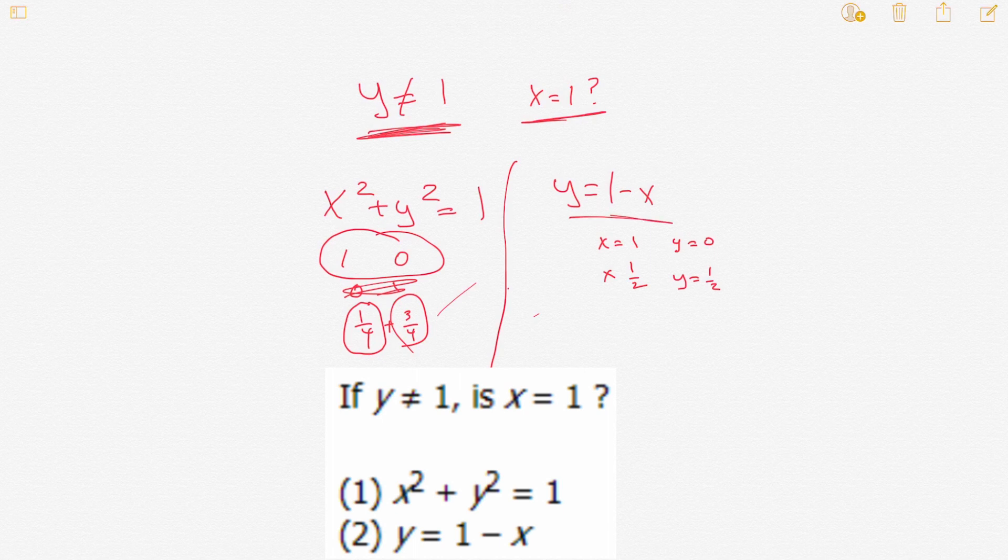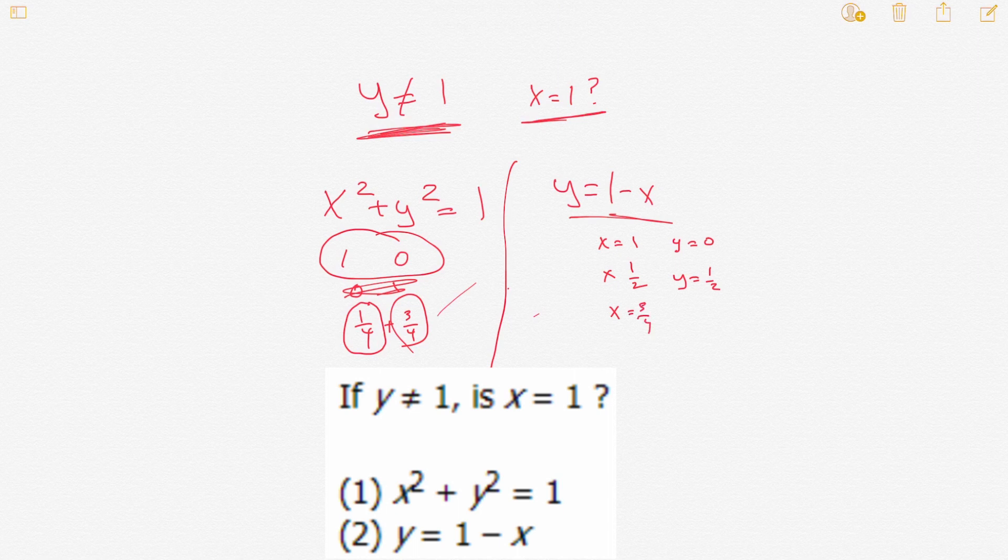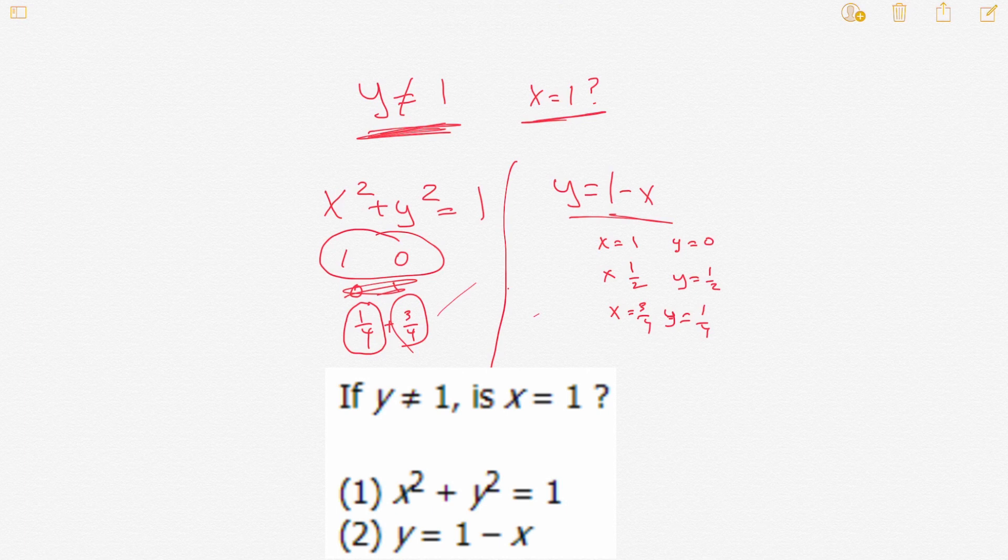So by itself, this is not sufficient, because we have infinite possibilities for x. x could be three-fourths, and y could then be one-fourth, right? So we'd have infinite possibilities. So by itself, number two is also not sufficient.